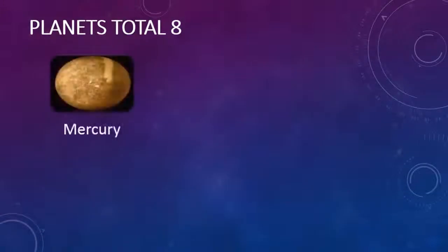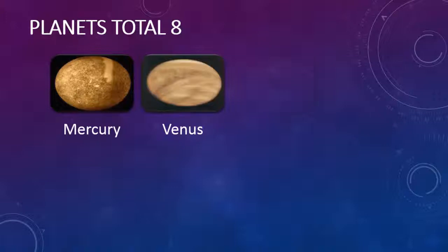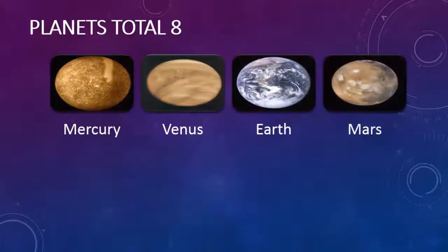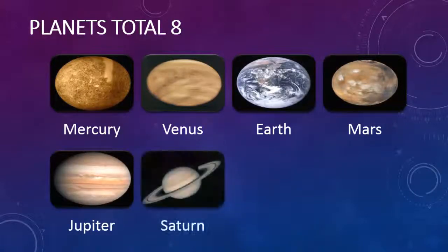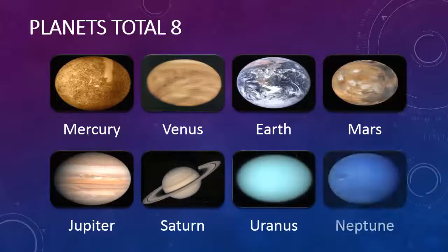Planets: Total 8. Mercury, Venus, Earth, Mars, Jupiter, Saturn, Uranus, Neptune.